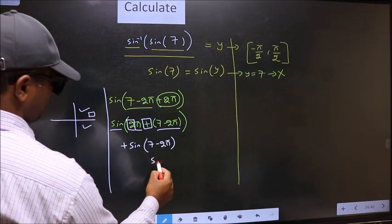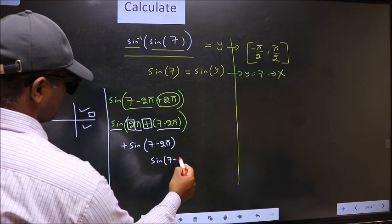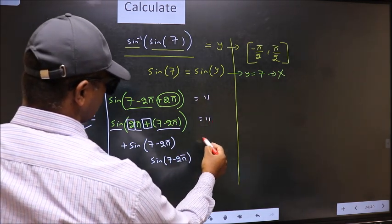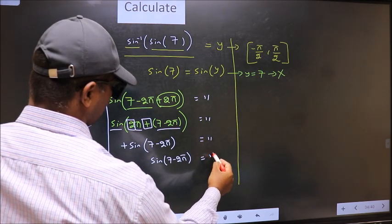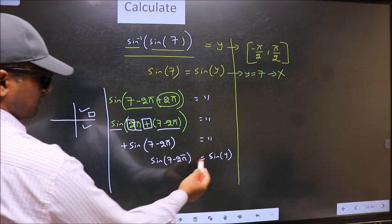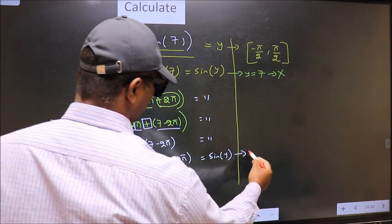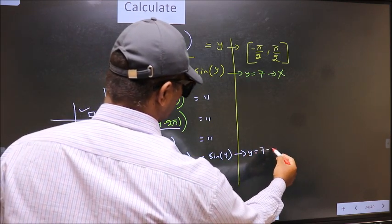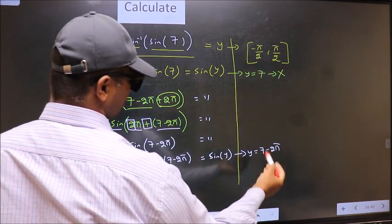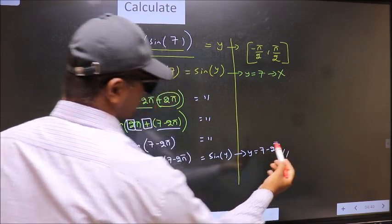Plus sign 7 minus 2π is sign 7, same thing. And on the other side no change, equal to sign y. Now comparing both sides, we get y to be 7 minus 2π. Does this lie in this interval? Yes. So this is our answer.